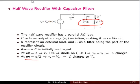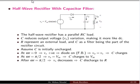At ωt = π/2, the voltage is maximum and the capacitor will charge to Vm. The AC cycle is maximum at π/2, so the capacitor is charging to Vm.